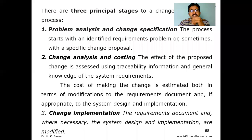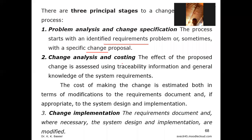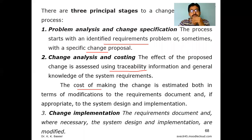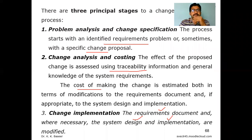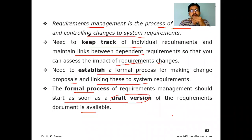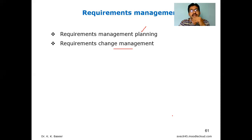All stages — problem analysis, change specification identifying requirements, change proposal, change analysis and cost impact based on traceability information — are part of the process. Once done, change implementation is carried out, applying necessary changes not only to requirement documentation but also to system design and implementation. A change in one thing does not belong to only one phase — it affects communication, planning, design, implementation, deployment, and everything else.